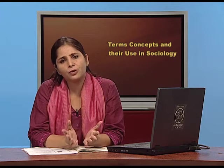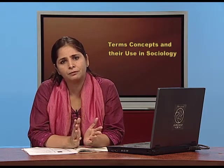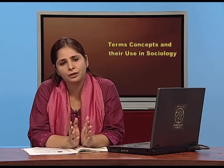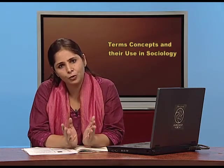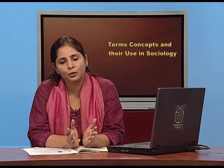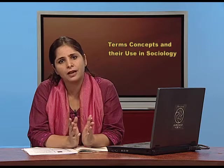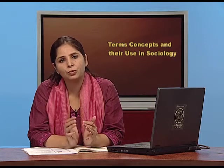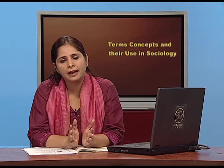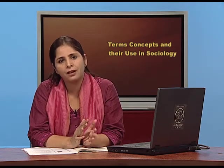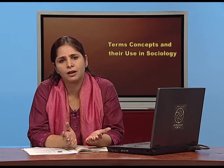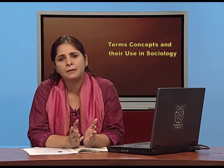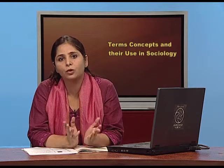Regarding rules and regulations, in primary groups rules exist but they are not written rules. For example, in our family we know we have to be home by 8 or 9 o'clock, but these are unwritten and flexible rules. In secondary groups, however, the rules and regulations are fixed, and even the punishments are fixed. In primary groups, there is flexibility in choosing the kind of punishment based on what rules were broken.